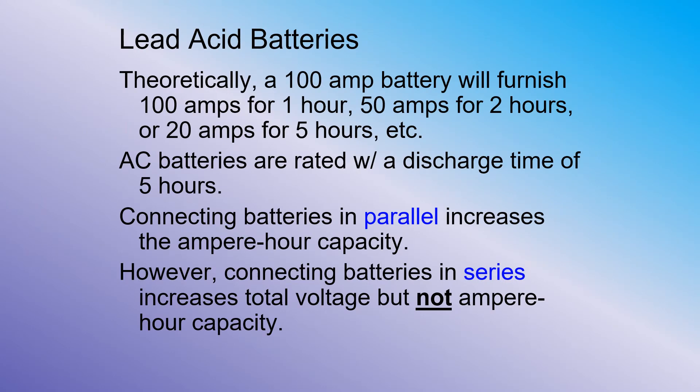Theoretically, a 100 amp battery will furnish 100 amps for one hour, or 50 amps for two hours, or 20 amps for five hours, etc. Aircraft batteries are rated with a discharge time of five hours. Connecting batteries in parallel increases the amp hour capacity. However, connecting batteries in series increases total voltage, but not amp hour capacity.